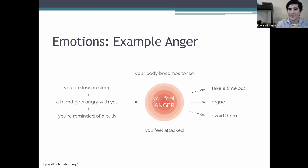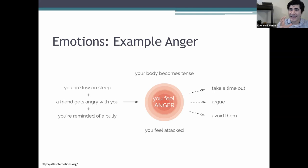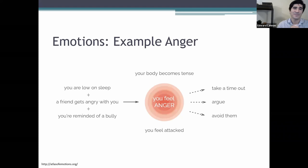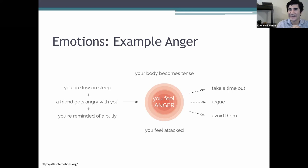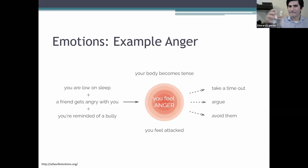Another example: your friend gets angry at you and now you feel angry. Why? You were low on sleep, and this reminds you of an old bully. The context lends itself to anger. Experientially, you feel attacked. Physiologically, your muscles become tense. Behaviorally, you could argue, avoid them, or take a time out. So emotions function on a timeline and are more complicated than we typically discuss — there are options within the range of responses.